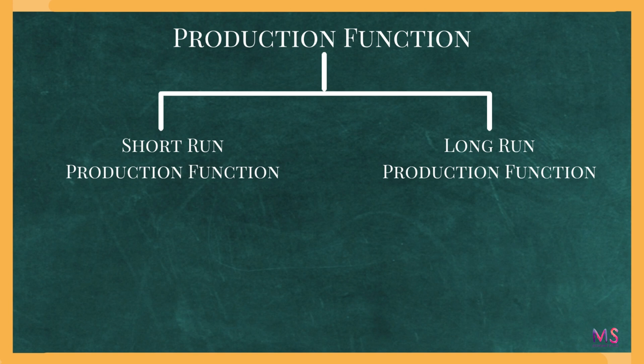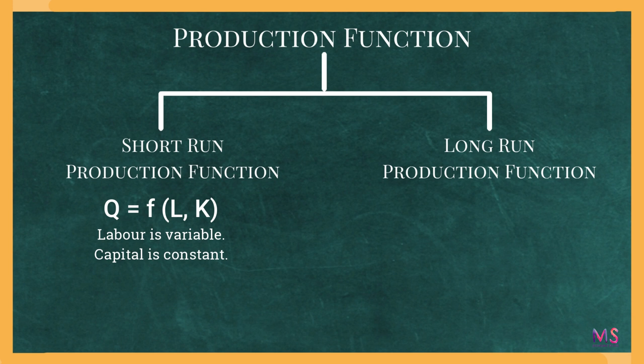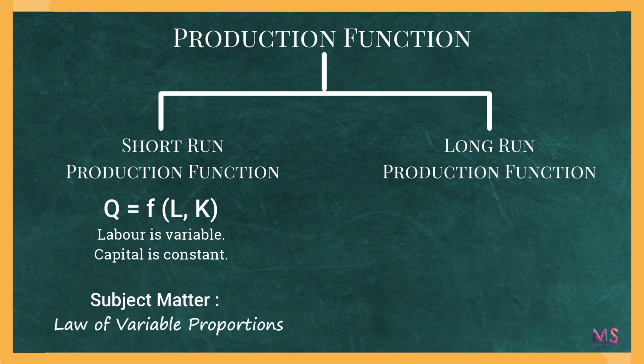In the case of the short run, output is a function of inputs where one input is kept as variable while all other inputs are kept as constant. Here, Q is the output and L and K are labor and capital respectively. This functional relationship shows that output is a function of labor and capital, where labor is the variable input and capital is kept constant. The study of the short run production function is the subject matter of the Law of Variable Proportions, which has already been covered by us.